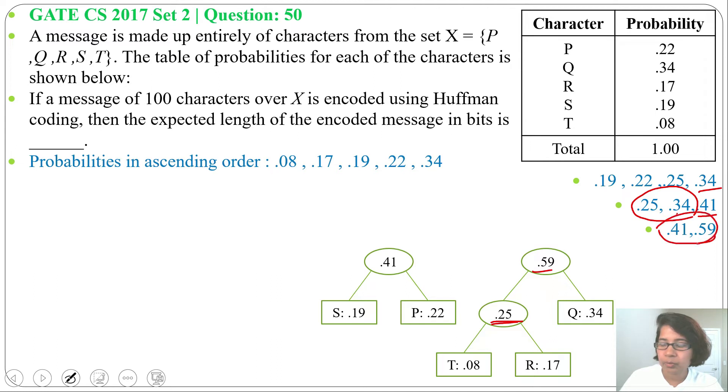Next, we will add these two, 0.41 and 0.59. So after addition, we will get 1.00. Now the tree is constructed.